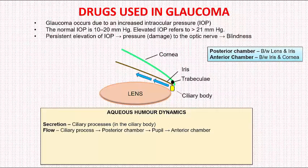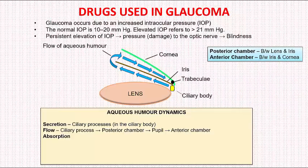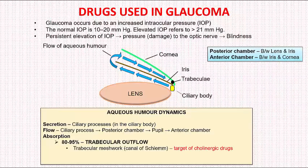The aqueous humor then flows into the posterior chamber and reaches the pupil. From there it moves into the anterior chamber. It finally gets absorbed by two outflow pathways: the trabecular outflow, which is via the trabecular meshwork and the canals of Schlemm. This accounts for 80 to 95 percent of aqueous humor drainage, and cholinergic drugs specifically target this pathway.